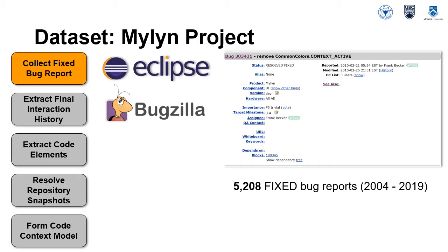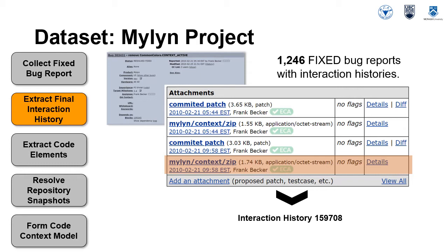To gather interaction histories, we considered over 5,000 fixed bug reports of the Myelin project from the Bugzilla system between 2004 and 2019. The Eclipse Myelin tool records interaction histories as a developer works on the code base. Each interaction history includes a record of the code elements viewed and edited by the developer. Myelin enables one or more interaction histories to be associated with each task. From this set of fixed bug reports, we excluded those that did not have interaction histories associated with the report, leaving 1,246 bug reports to consider.